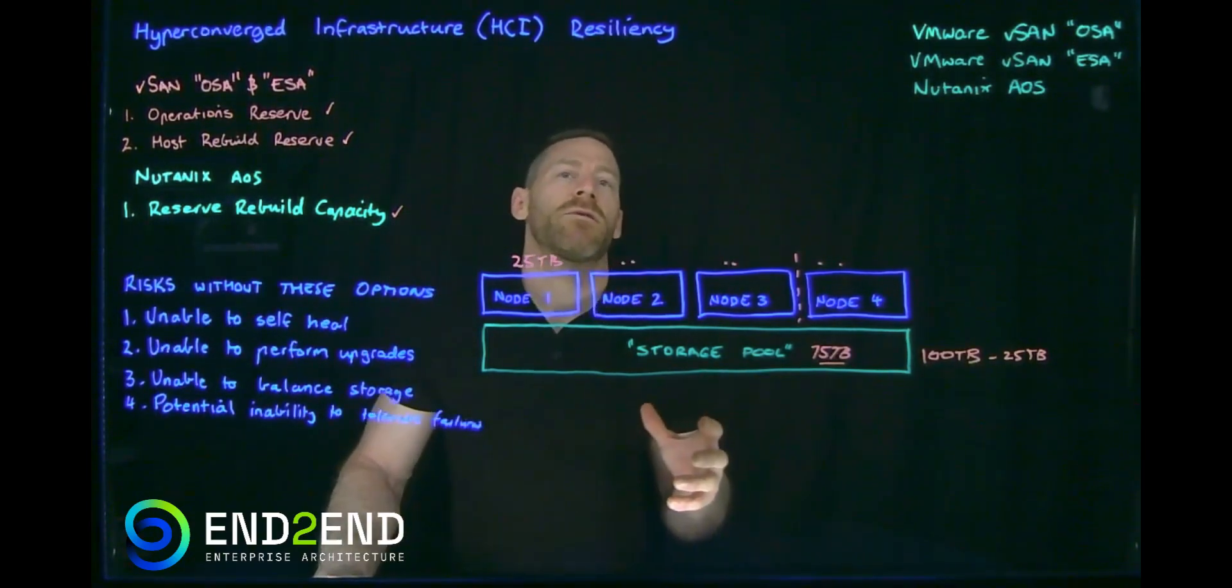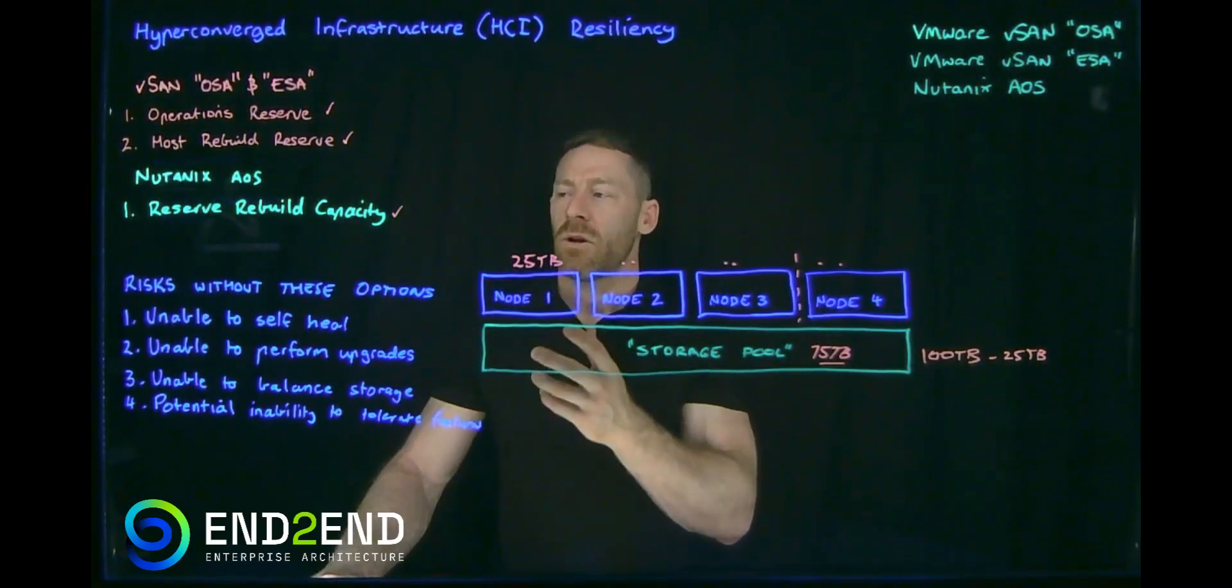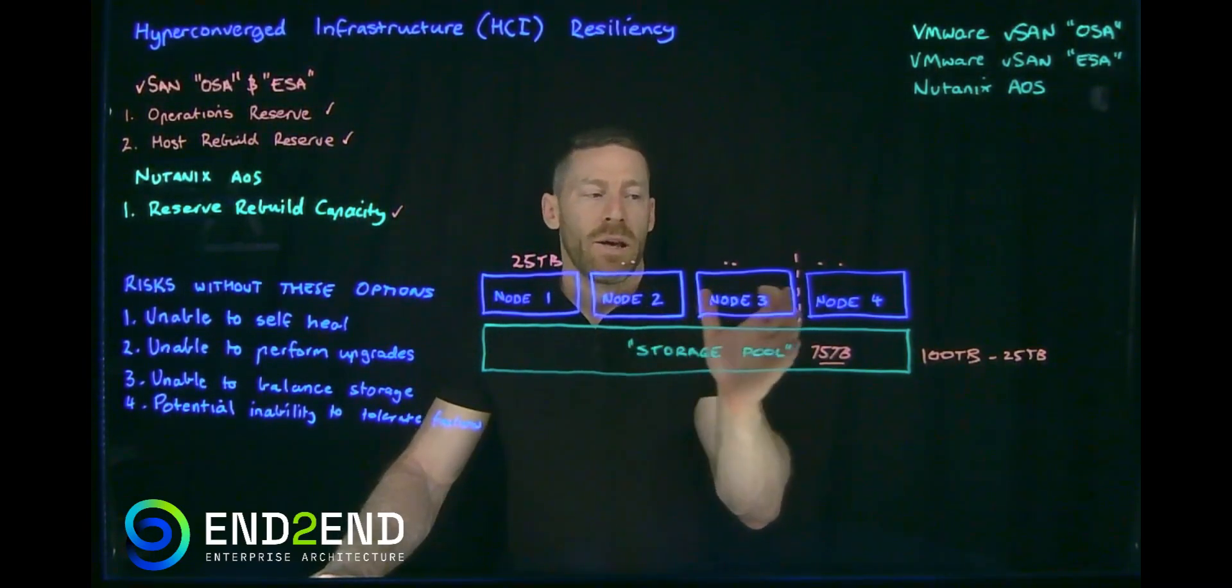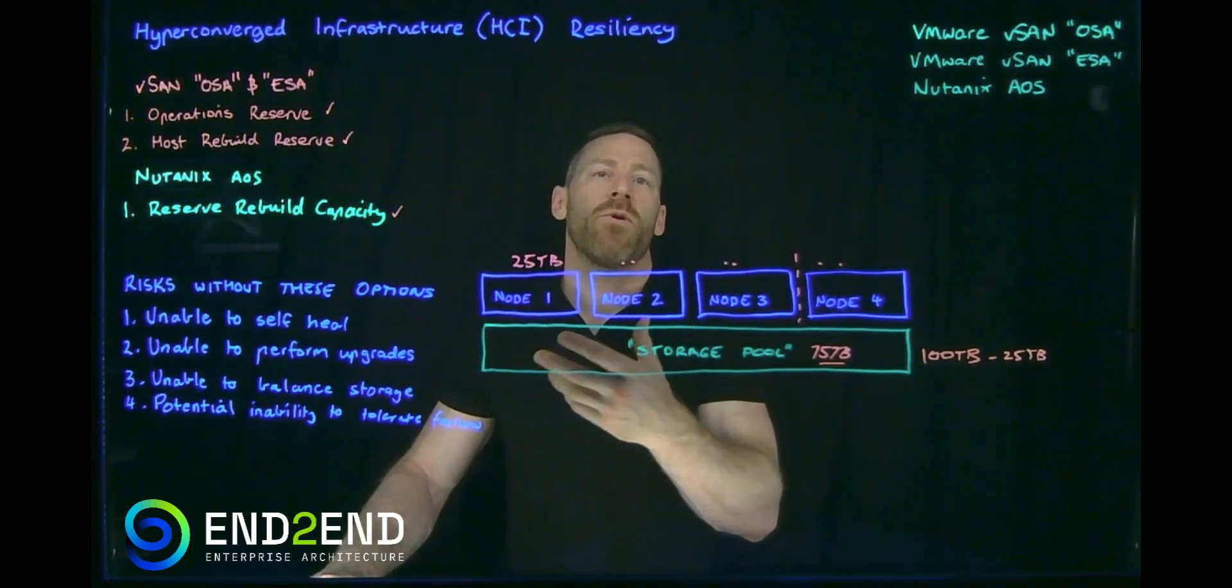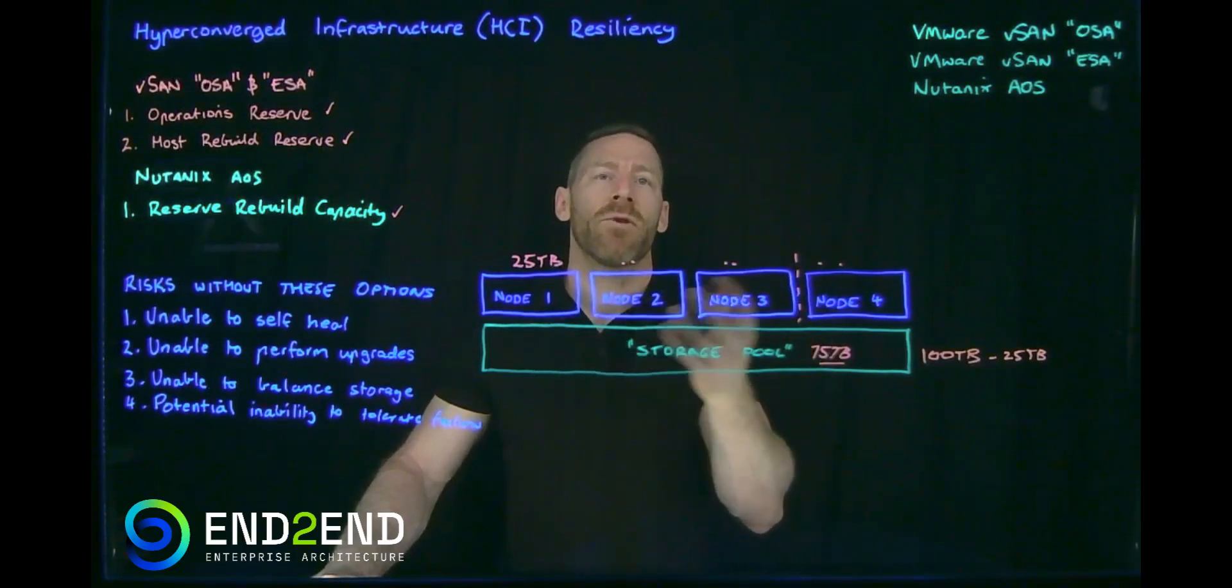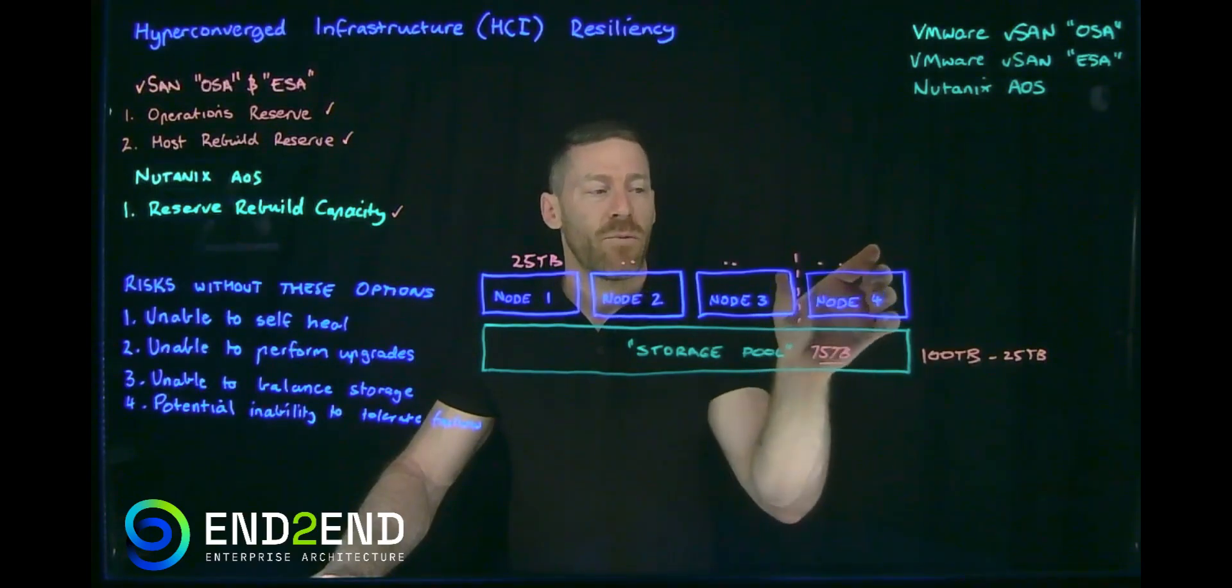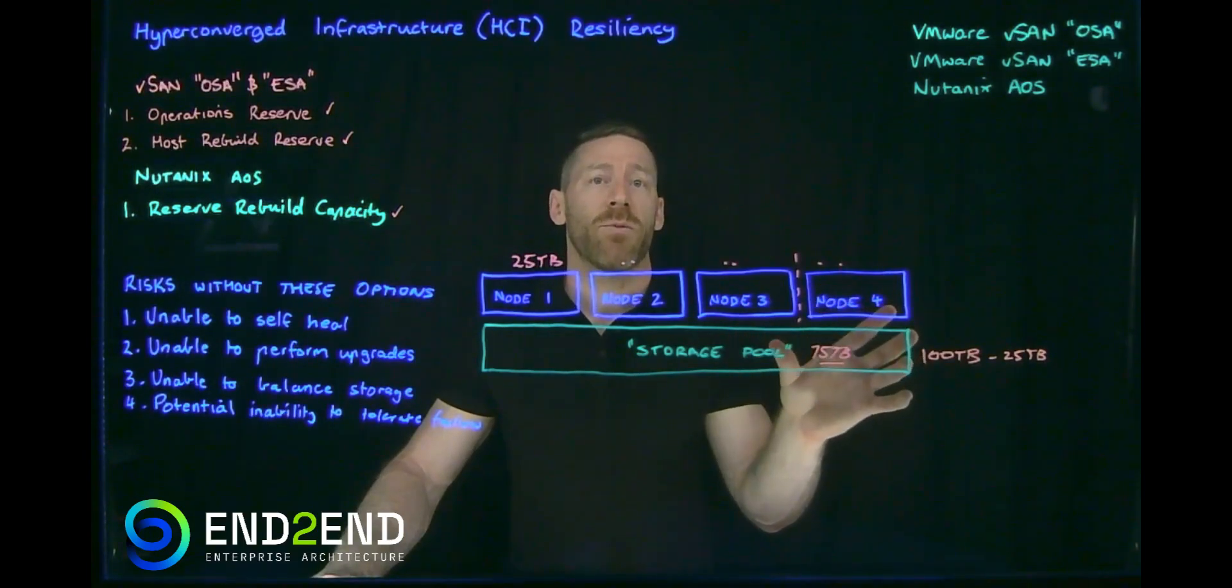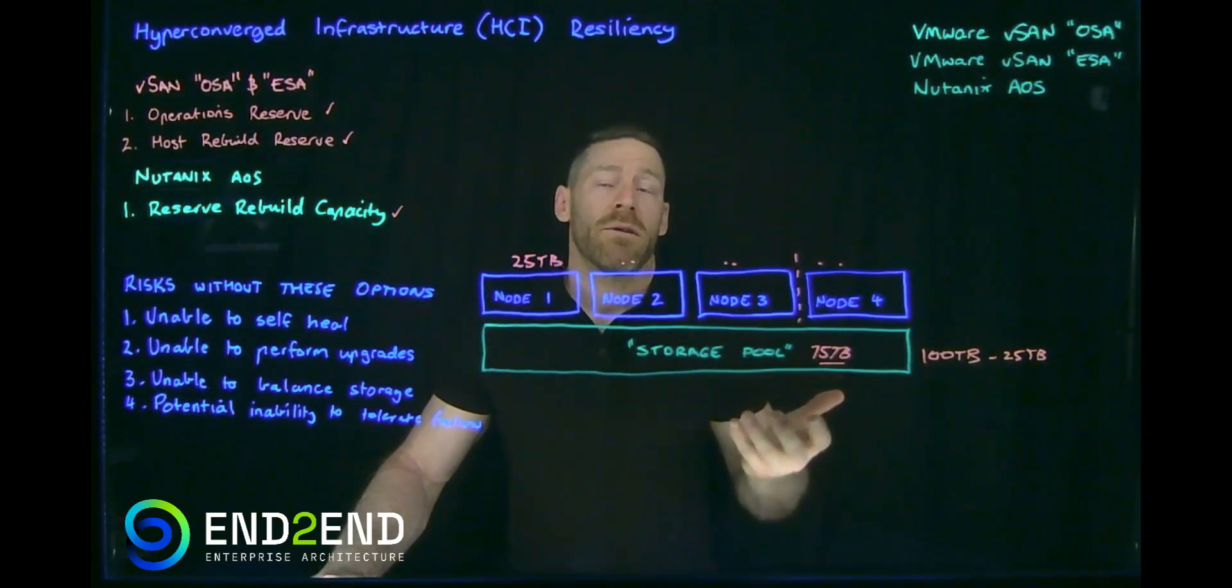Alright, let's talk about some of the risks associated with not enabling the settings we've just discussed. So let's take the most obvious one. If we don't have enough capacity in our cluster, we're unable to perform a self-heal from a failure. So obviously with HCI, it's a very resilient architecture. That's one of the huge benefits of HCI. If we don't design with that N+1 in mind, we might not be able to self-heal, putting us at significant risk.